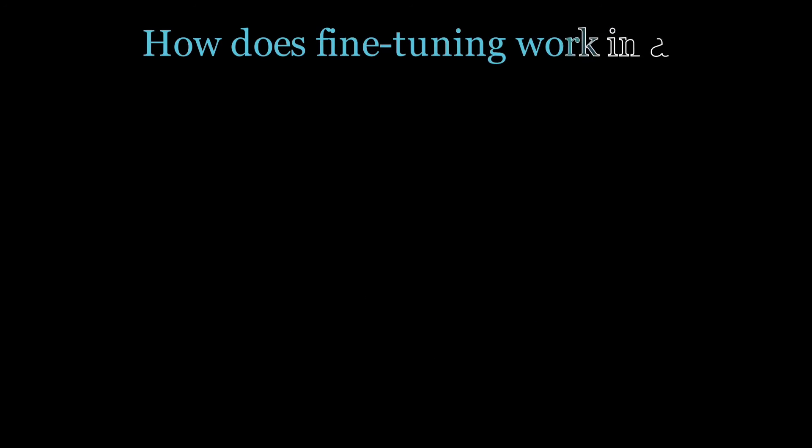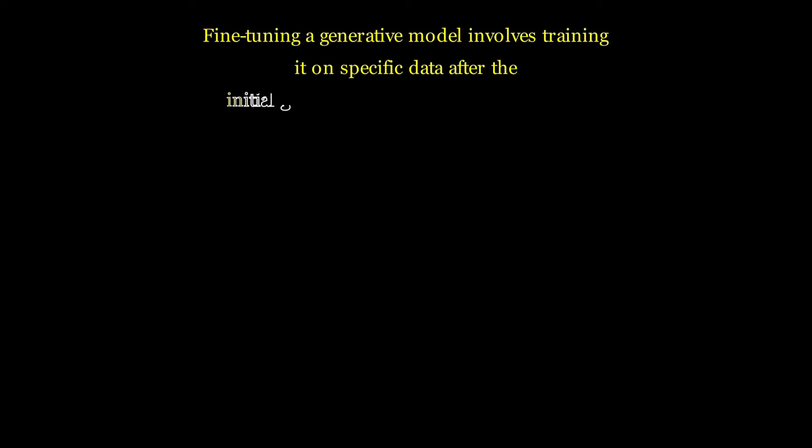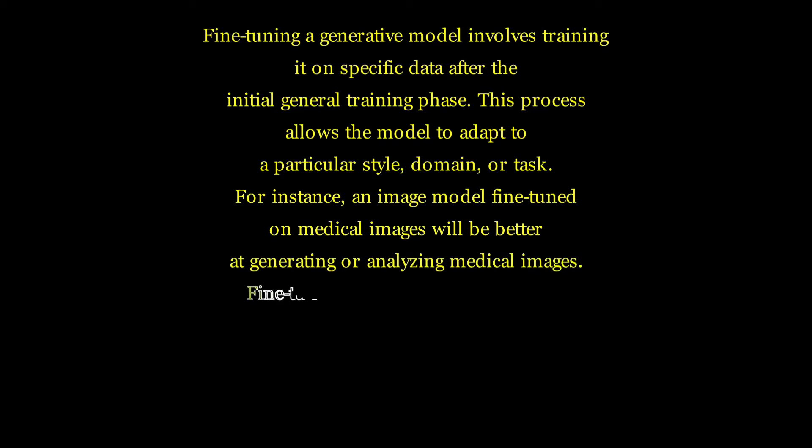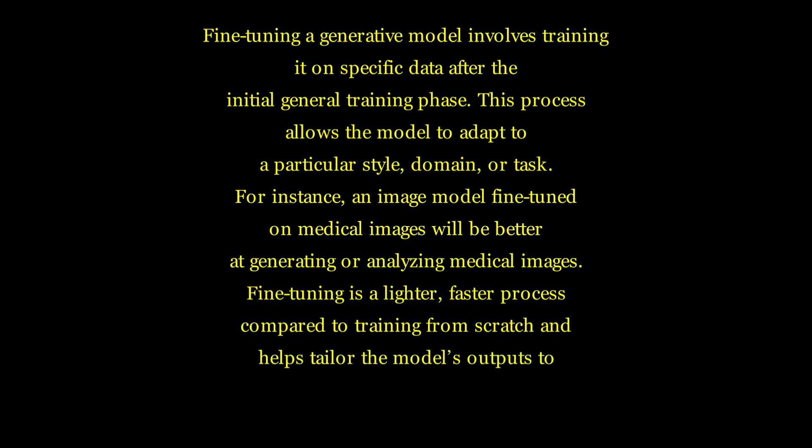How does fine tuning work in a generative model? Fine tuning a generative model involves training it on specific data after the initial general training phase. This process allows the model to adapt to a particular style, domain, or task. For instance, an image model fine-tuned on medical images will be better at generating or analyzing medical images. Fine tuning is a lighter, faster process compared to training from scratch and helps tailor the model's outputs to specific needs.